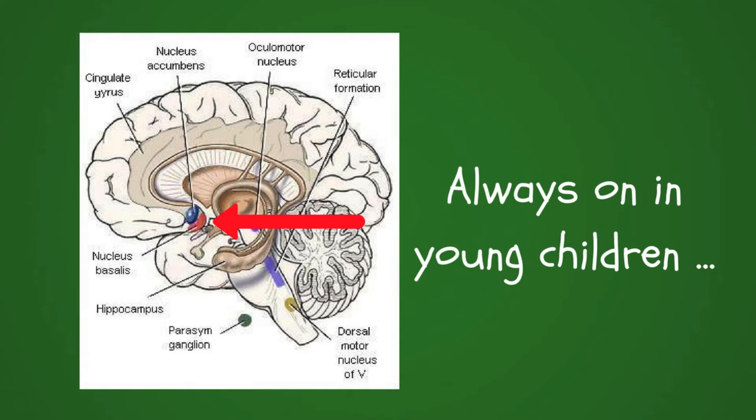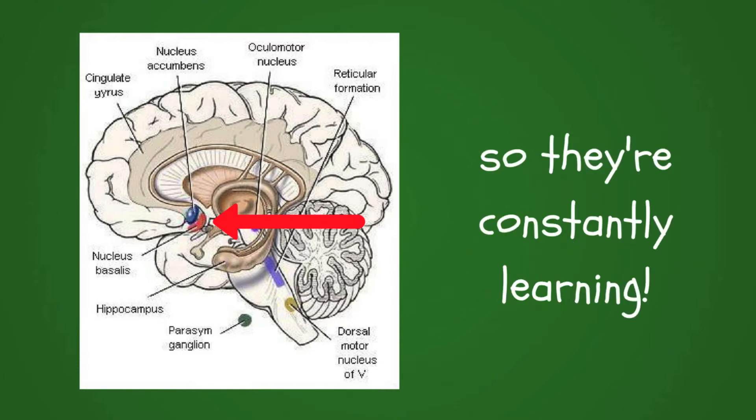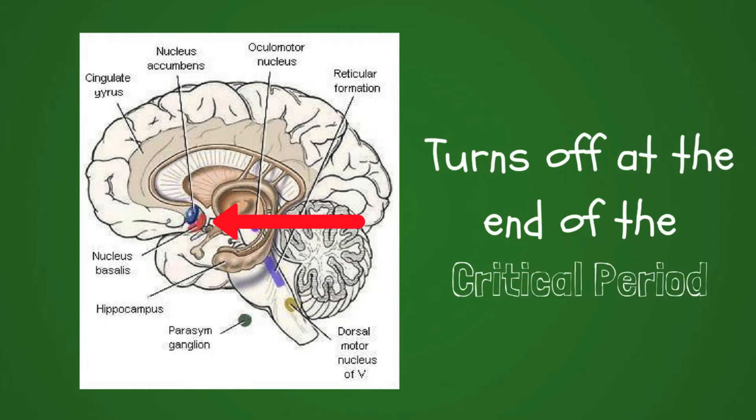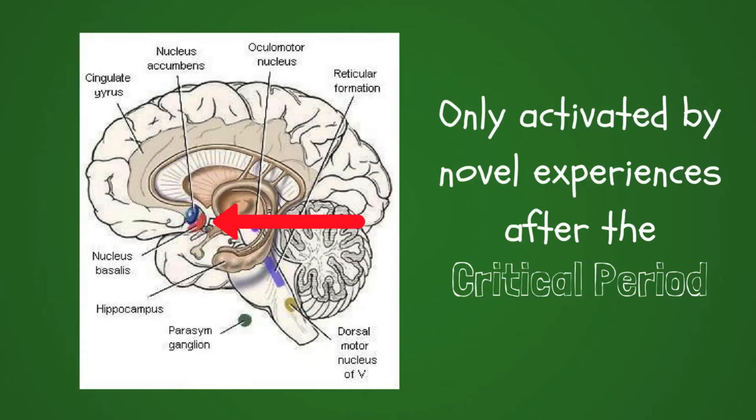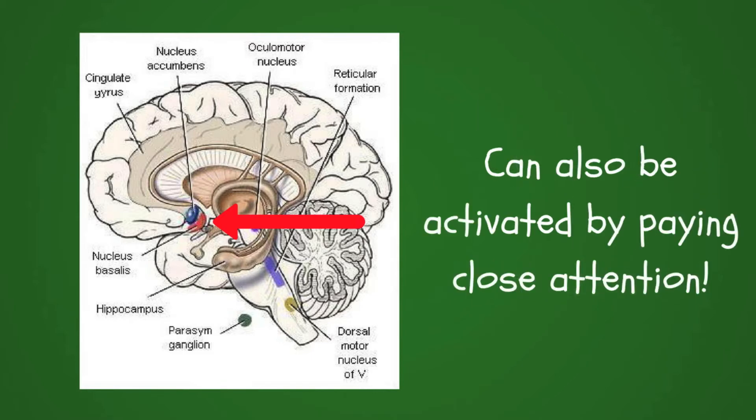In young children, the nucleus basalis is always on, which enables them to constantly learn. However, this always-on state ends at the end of what is known as the critical period. The critical period in humans is usually between birth and age 3. After the critical period, the nucleus basalis is activated only by important or novel experiences or when we put effort into paying careful attention.